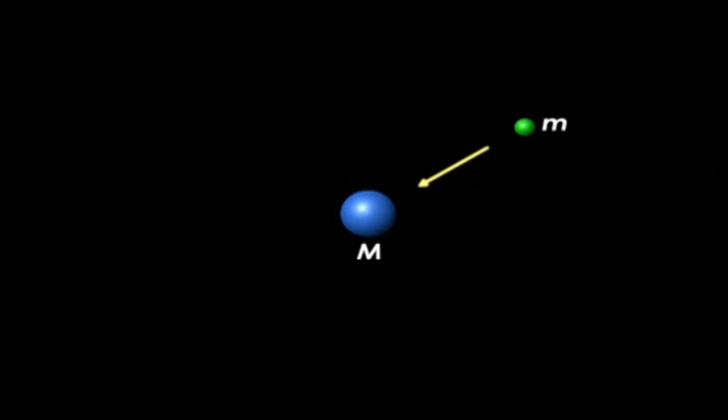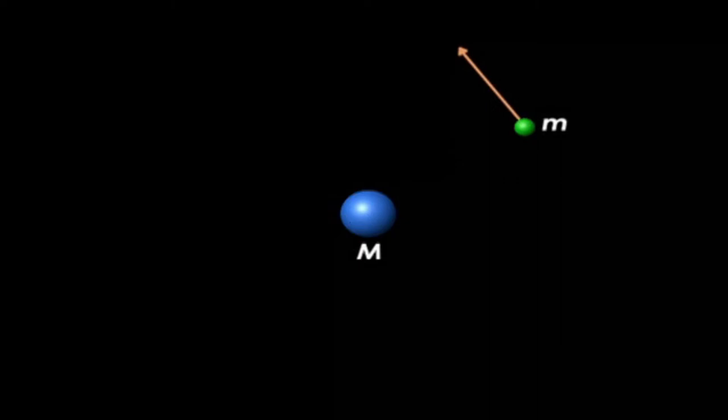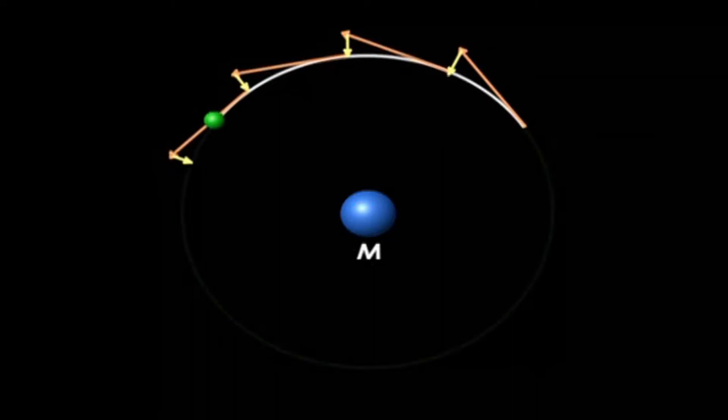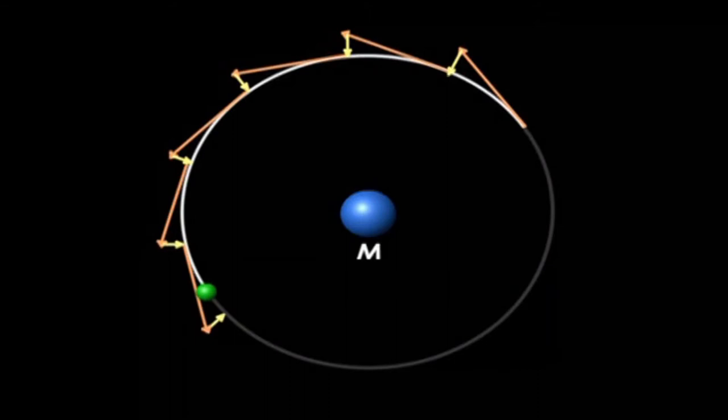Imagine a large mass pulling on a small mass. If the small mass were initially stationary, it would just fall directly towards the large mass. But if it's initially moving sideways, then the sideways motion and the inward pull combine together, and the upshot is that the small mass travels in an orbit — in this case, a circular orbit. Ultimately, that's all that orbits are: the combination of sideways motion and an inward pull of gravity.